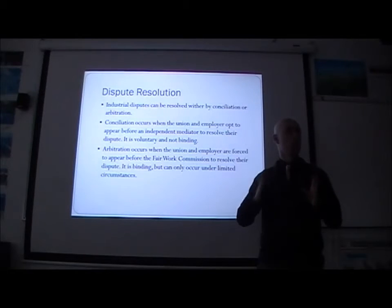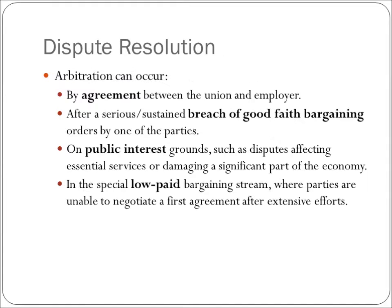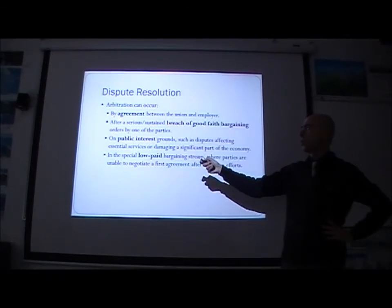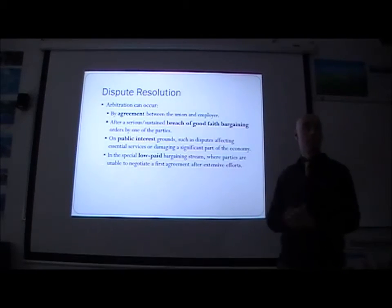Arbitration occurs when the union and employer are forced to appear before the Fair Work Commission to resolve their dispute. It is binding, but can only occur under limited circumstances — including by agreement between the union and employer, or after a serious or sustained breach of good faith bargaining orders by one of the parties. By agreement, both parties decide not just to go to conciliation but to go to arbitration, meaning they must accept the decision at the end.